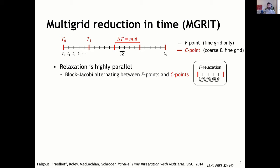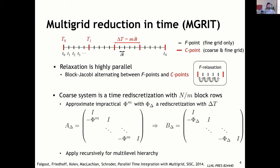Relaxation is a highly parallel procedure that does block Jacobi between F and C points. After relaxation, we form a coarse grid. The coarse grid matrix A_delta is a smaller system with N over M block rows. A_delta is an ideal coarse grid operator because we have phi to the M power — we coarsen M time steps and put phi^M as our time stepping operator. That's impractical since it's as expensive as the fine grid matrix, so in the approximate reduction we substitute phi_delta, a coarse time stepper. If you do this recursively, you can get a multilevel hierarchy.